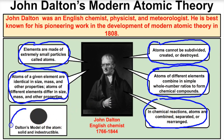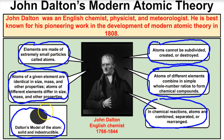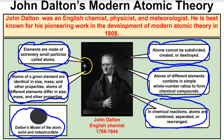John Dalton's model of the atom in 1808 looks like a solid, indestructible little sphere of matter. There weren't any protons, neutrons, or electrons in Dalton's model — no electron cloud or energy levels — because those things had not been discovered yet. After 1808, other scientists start to develop on his work, and subatomic particles and energy levels start to be discovered.